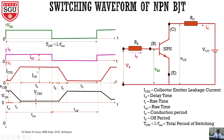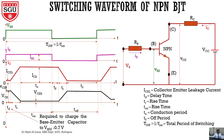The same cyclic process will repeat based on the switching of the base current. From this you can understand that the bipolar junction transistor is controlled by base current. Based on the on and off time period of the base current, we can control the current flowing through the collector to emitter as well.